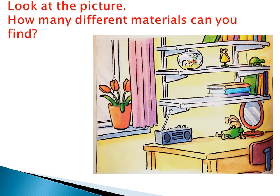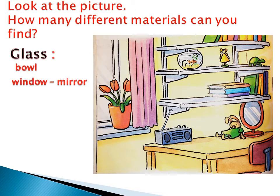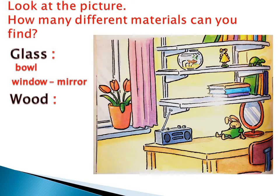First, look at this picture. How many different materials can you find? I'm going to help you. The first one here is glass — like the pole, the window, and the mirror. They are made from the same material, glass. And there are other materials like wood — like the table and chair.